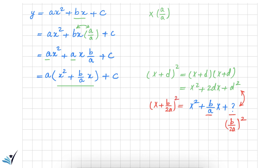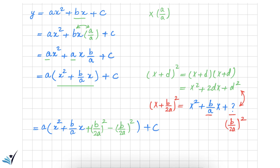But I cannot just add the missing term to the expression inside the parenthesis, because that would change the expression. What I need to do is add and subtract the missing term, so the expression stays the same. So I have A times (X² + (B over A)·X + (B over 2A)² − (B over 2A)²), close parenthesis, plus C. Because I added and subtracted the same term, they cancel each other out and the result is the same as before.